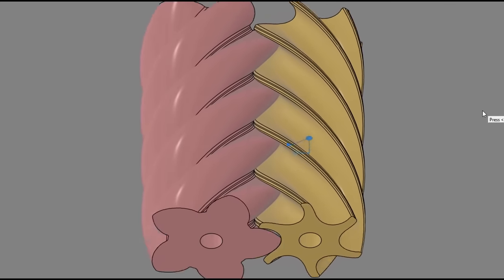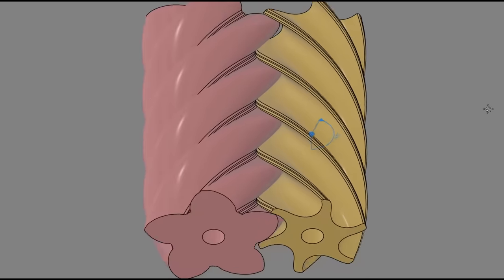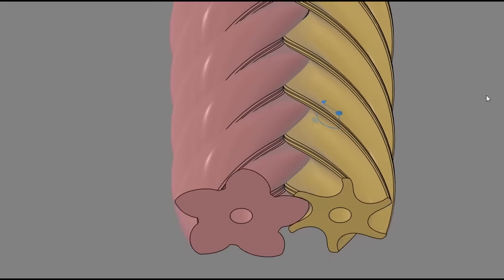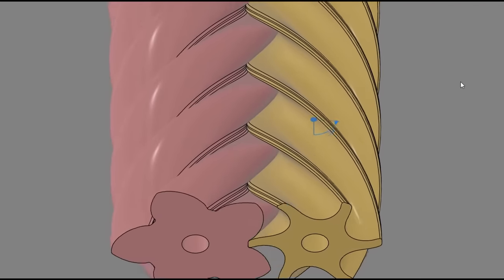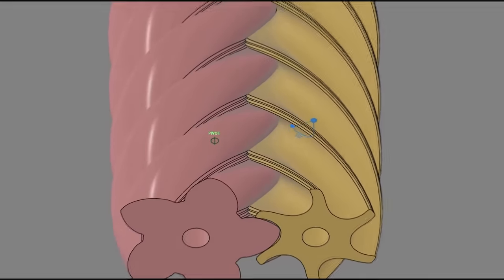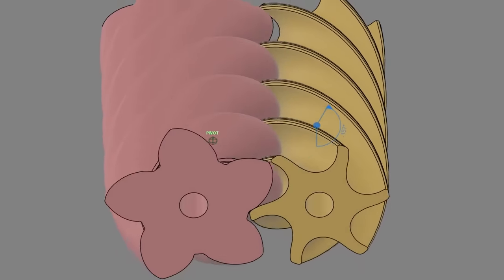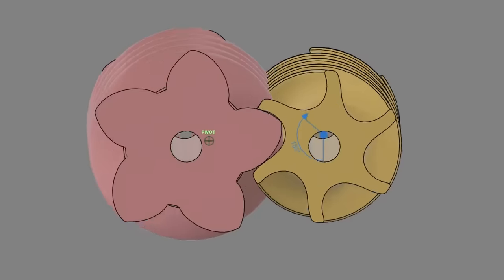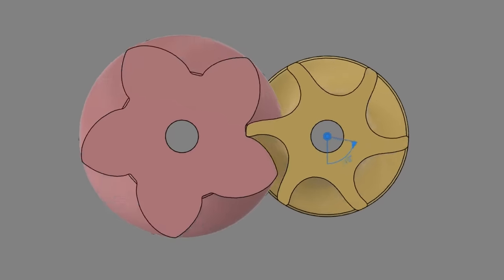The other cool thing about twin screw compressors is that the rotors actually form a pair of cycloidal gears. So even though the main rotor is larger in diameter, it has fewer lobes than the gate rotor, so it'll actually spin faster. And since there are five lobes on the main and six on the gate, this results in a gear ratio of five to six.